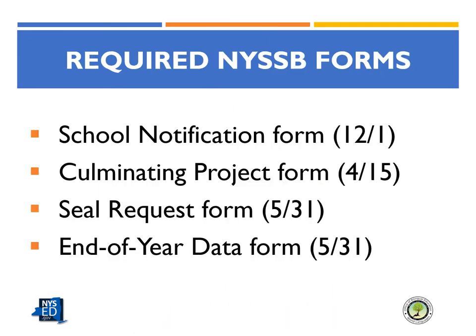There are four required forms that must be submitted each year in which schools offer a Seal of Biliteracy program: the school notification form, due by December 1st; the culminating project form, due by April 15th; the seal request form, due by May 31st; and the end of year data form, also due by May 31st. Each form will be explained in a subsequent slide and covered in detail in the modules that follow.